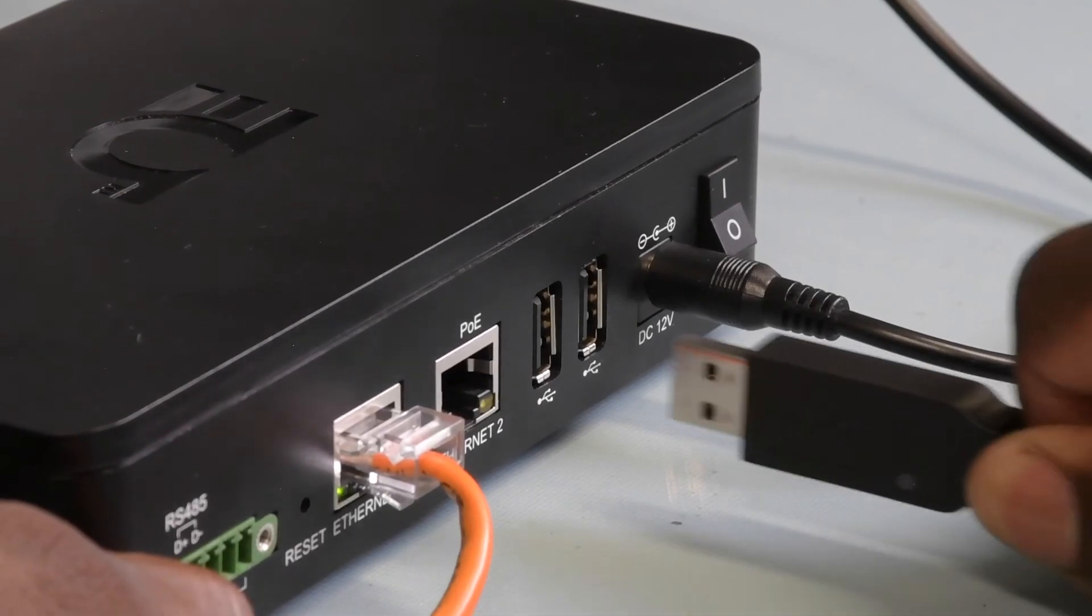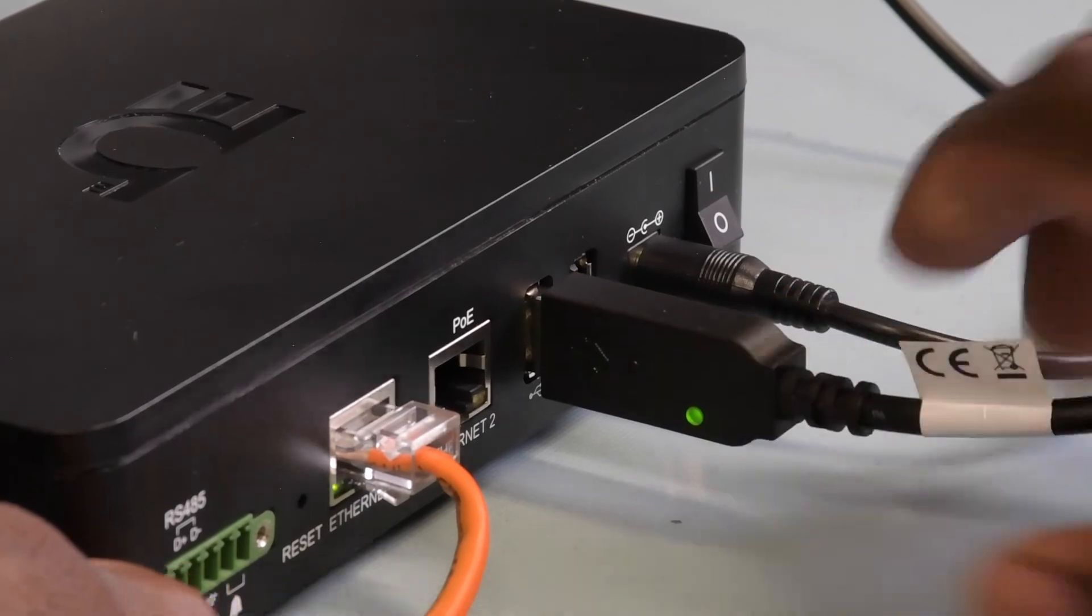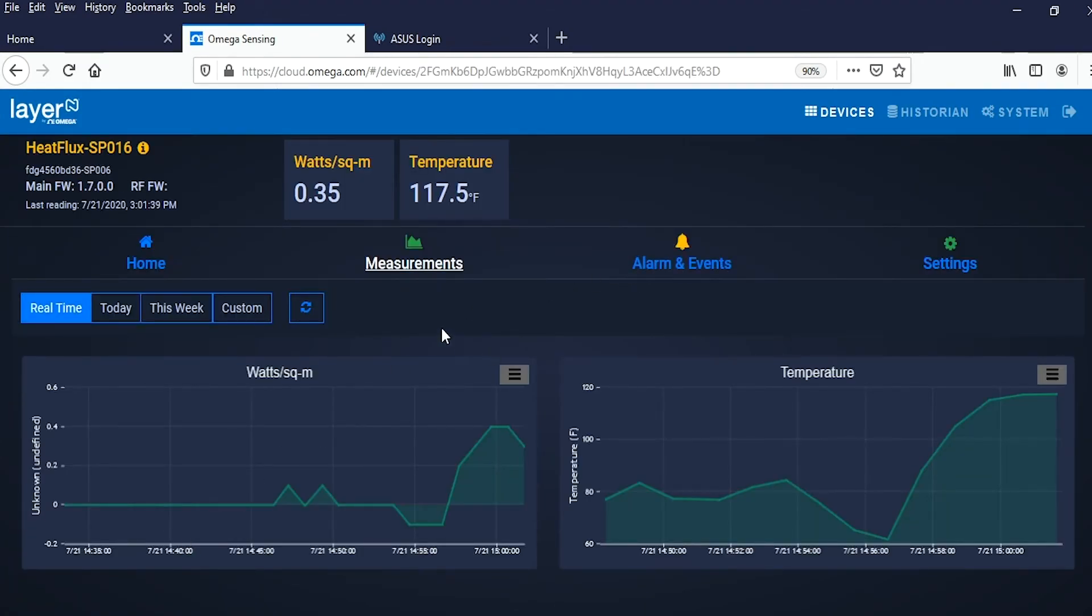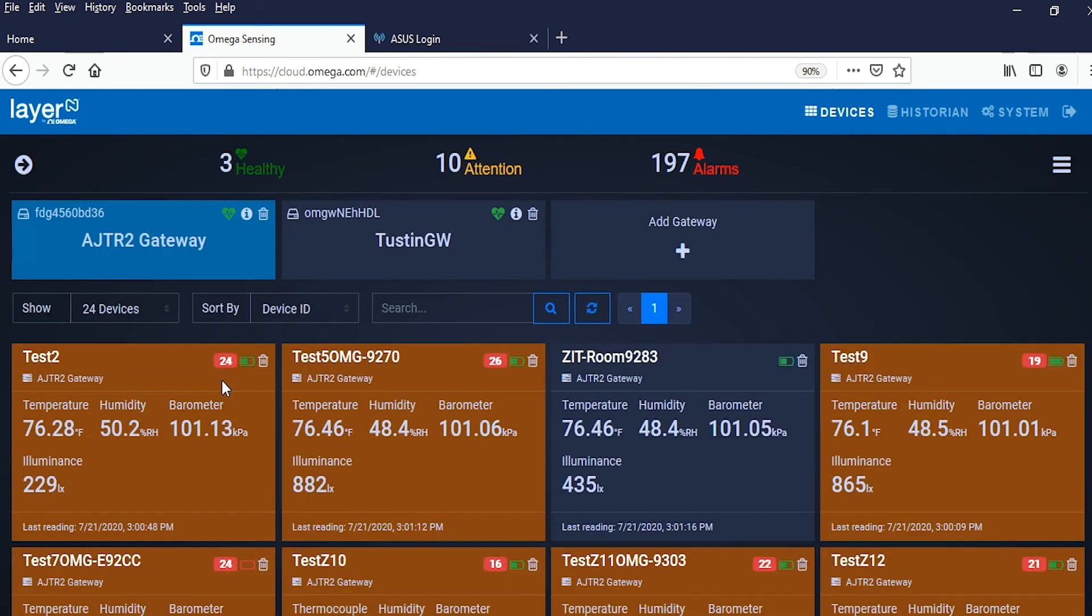I'll unplug the USB interface from the laptop and plug it into our Layer-N gateway. Now if we log into our Omega cloud account, we can see the heat flux sensor's readings here. And as with all the smart sensing devices in the Layer-N ecosystem, we can aggregate our data just about any way we choose.